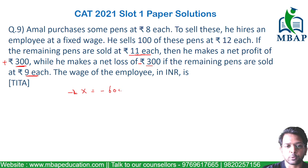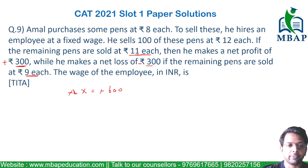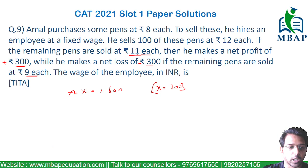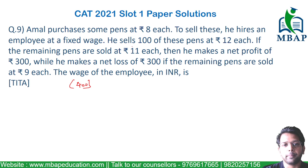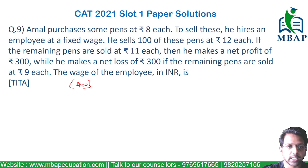The overall value reduces by Rs.600 if you reduce the price of each pen by Rs.2. So the number of remaining pens sold above the first 100 is 600 ÷ 2 = 300 pens. The total number of pens actually sold will be 100 plus 300, which is 400.